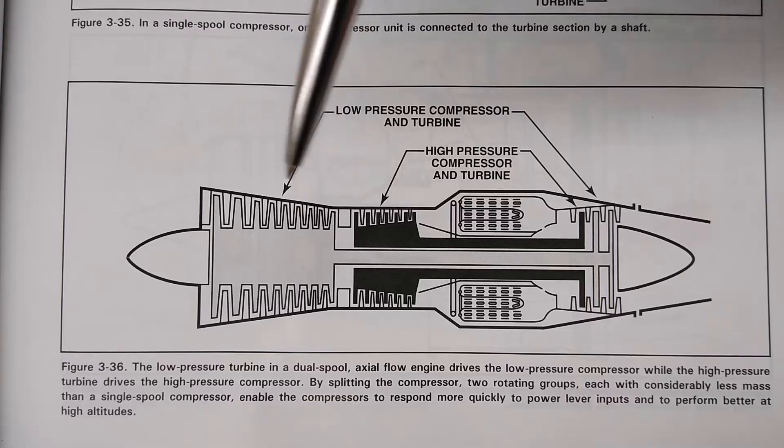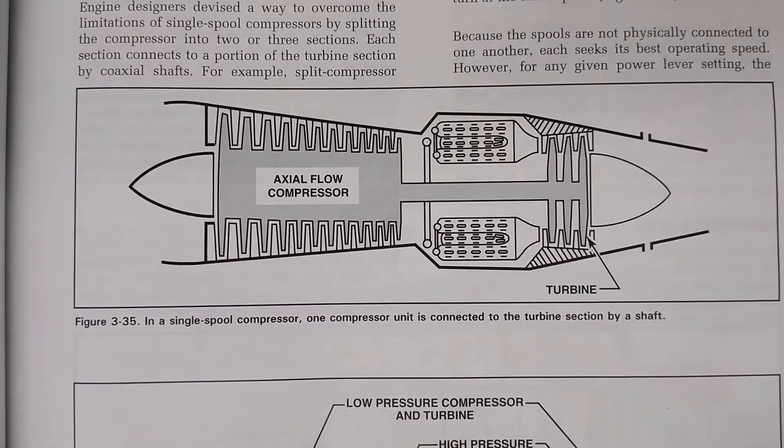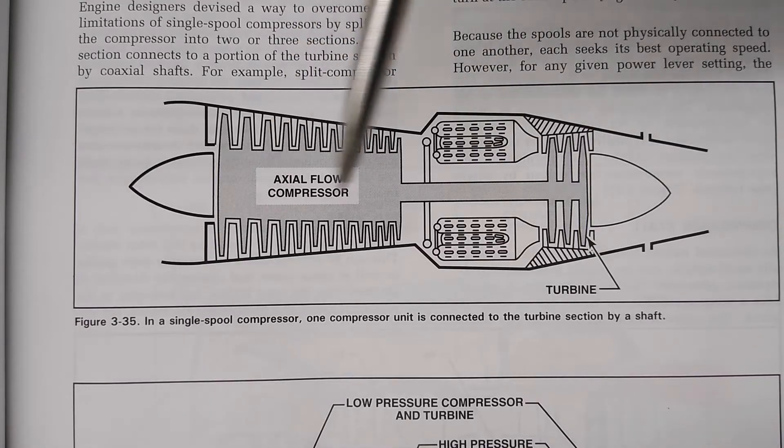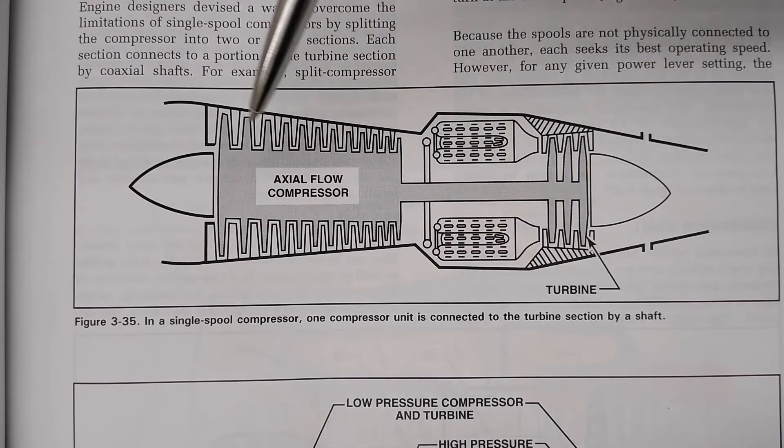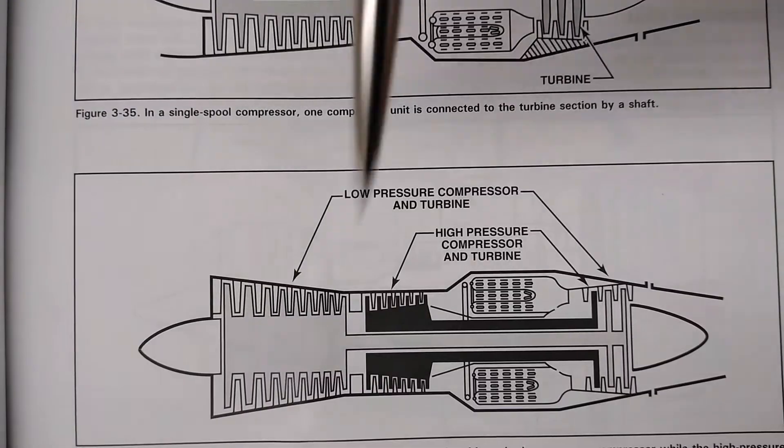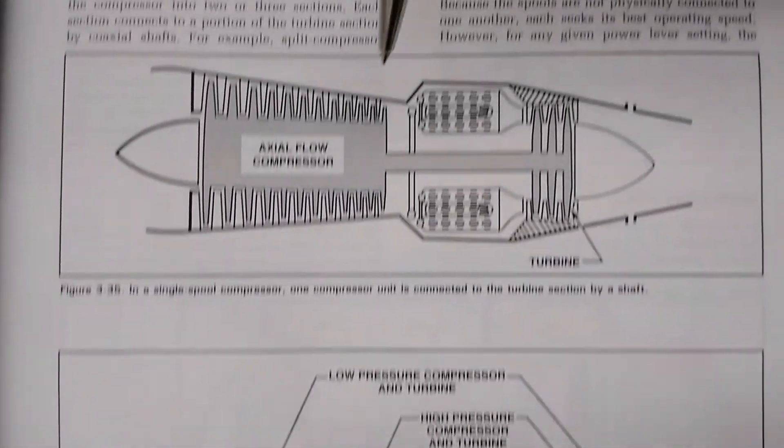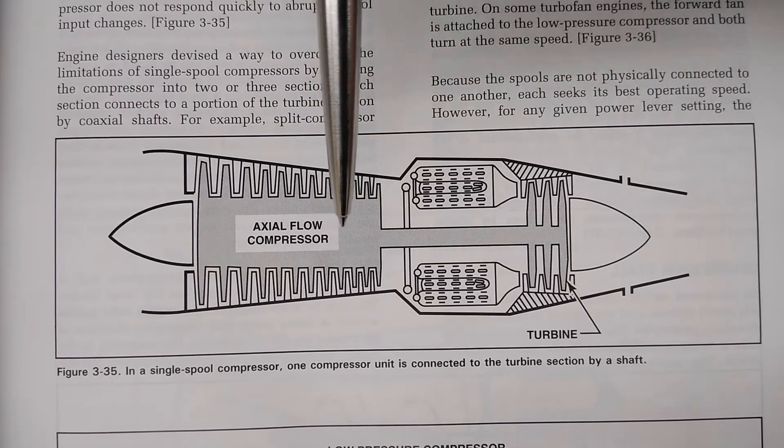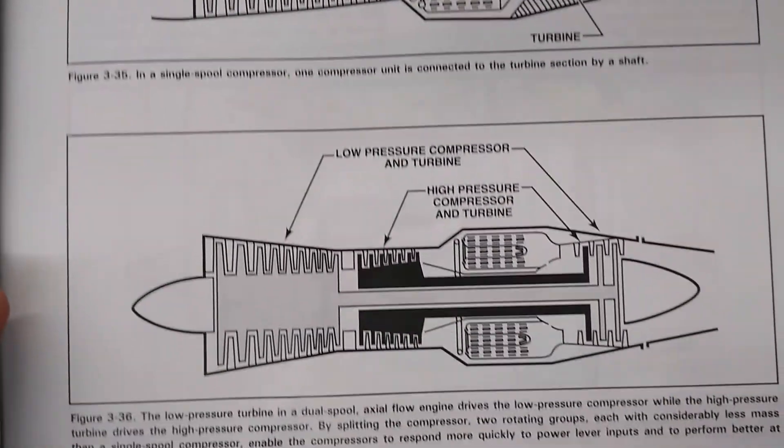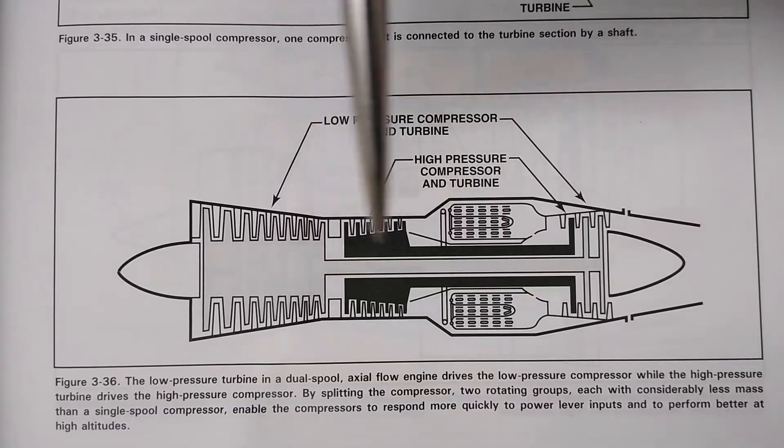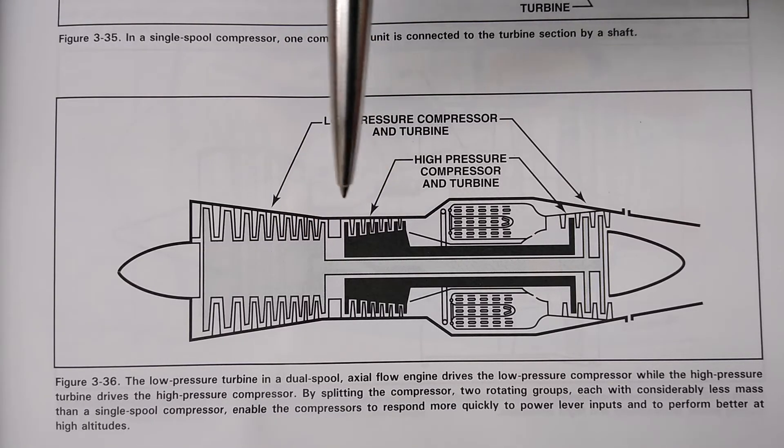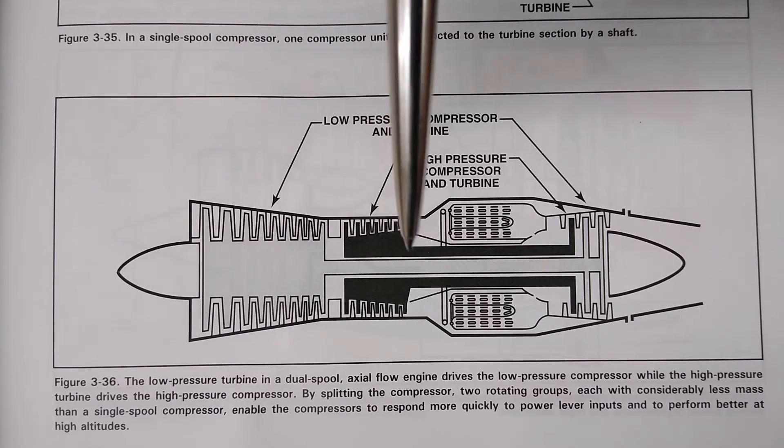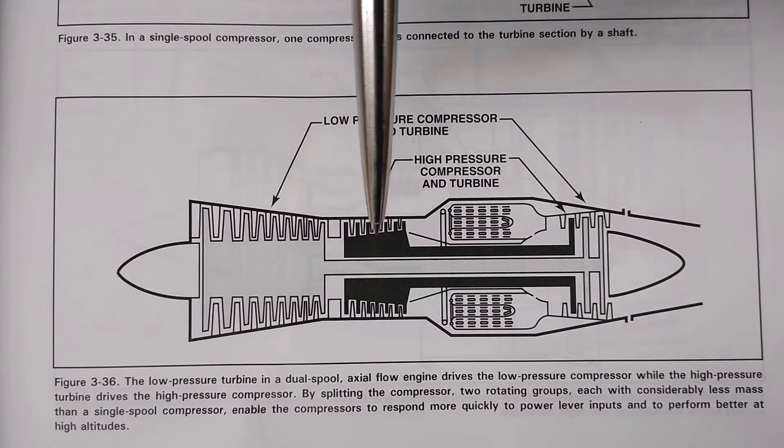So now you see the difference between a single spool, solid shaft, one single compressor, still with many stages just like you have here. But the stages are not different compressors—this is still one single compressor and a single spool. And this is a two-spool compressor. This would be your low-pressure compressor, and this is your high-pressure compressor.